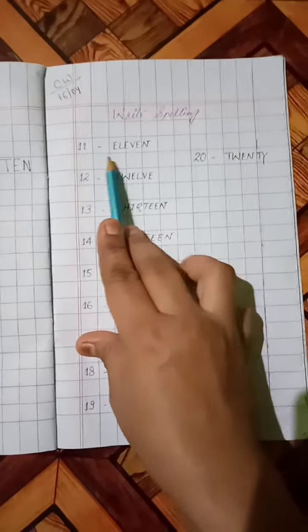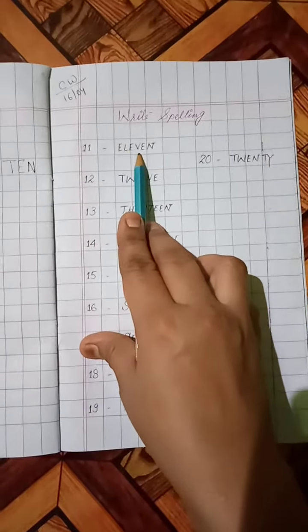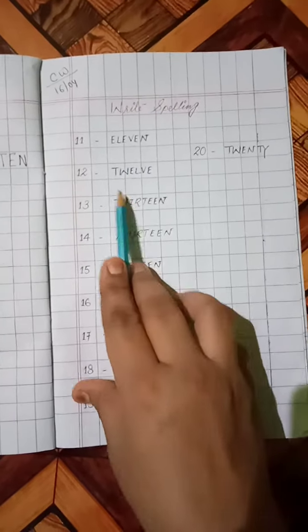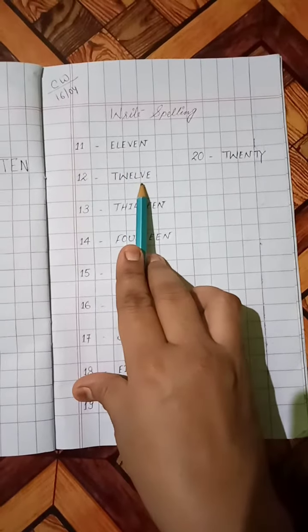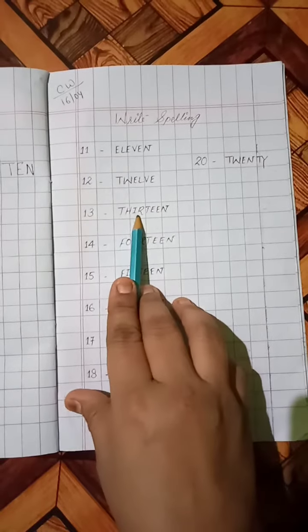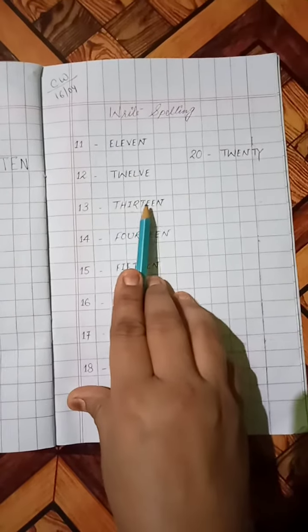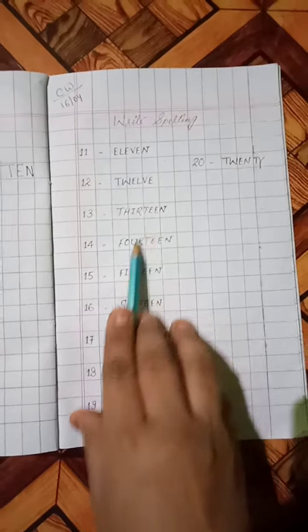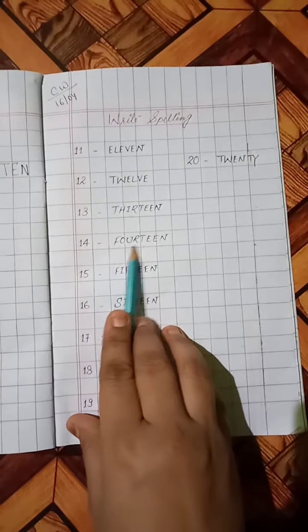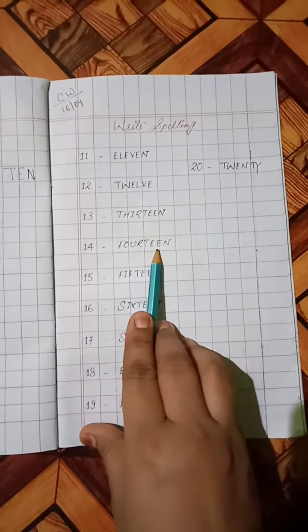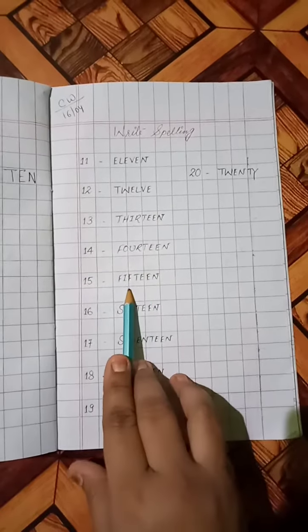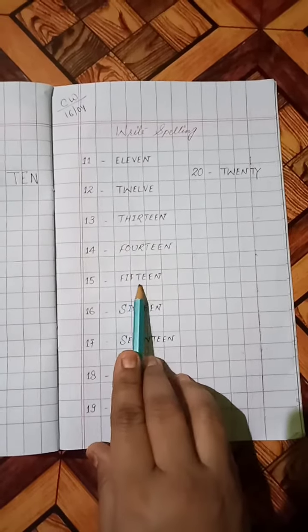E-L-E-V-E-N, 11. T-W-E-L-V-E, 12. T-H-I-R-T-E-E-N, 13. F-O-U-R-T-E-E-N, 14. F-I-F-T-E-E-N, 15.